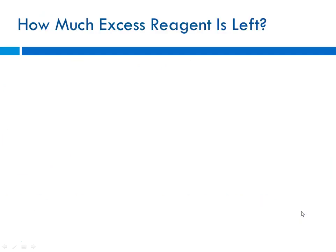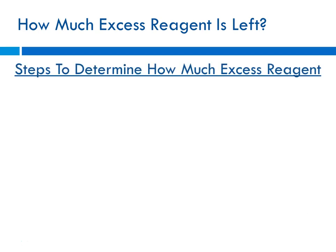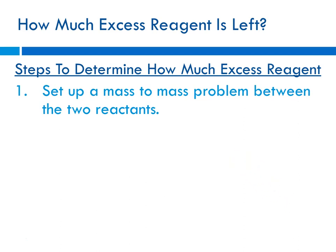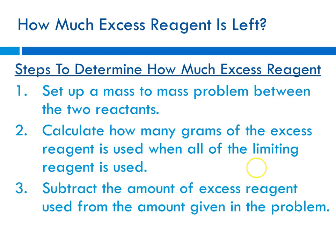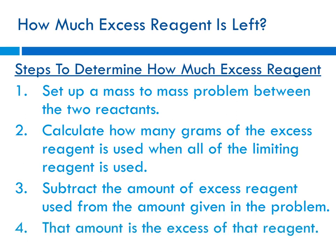So how much excess reagent is left? Here are the steps: first, set up a mass-to-mass problem, but this time between the two reactants instead of going to product. Then calculate how many grams of the excess reagent are used when all of the limiting reagent gets used. Finally, subtract the amount of excess reagent used from the amount you started with — that gives you the excess amount remaining.